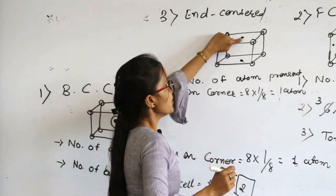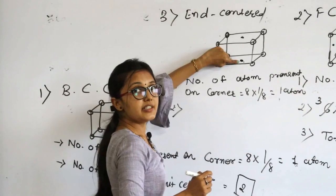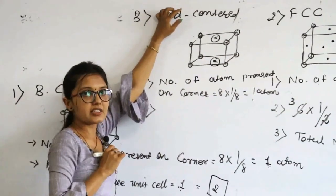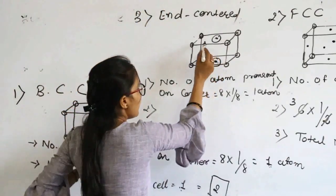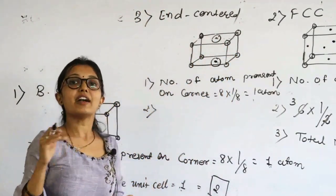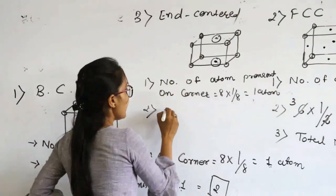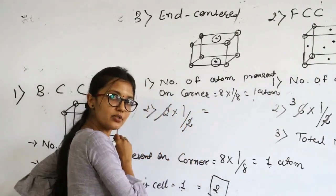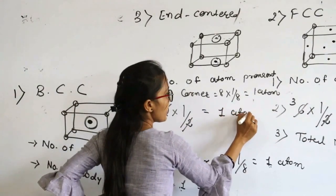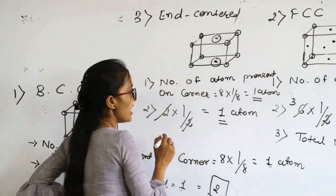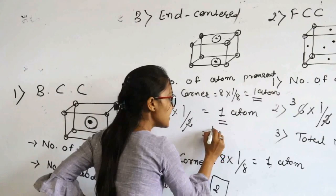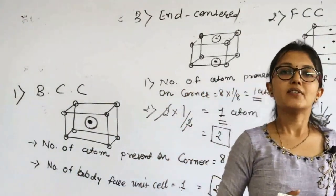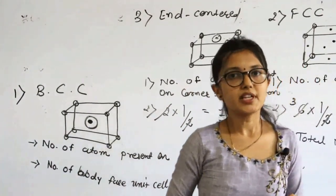For the two end-center atoms on opposite faces, each atom contributes half, so 2 × (1/2) = 1 atom. Total atoms in an end-centered unit cell: 1 + 1 = 2 atoms. In the next lecture, we will study Bravais lattice, also known as primitive unit cell. Thank you.